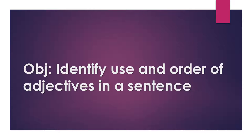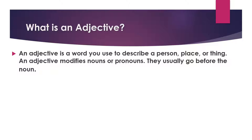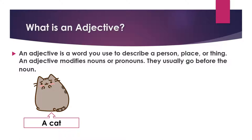First of all, what is an adjective? An adjective is a word you use to describe a person, place, or thing. An adjective modifies nouns or pronouns. They usually go before the noun. For example, we have a picture of a cat. A cat will be a noun, so we can modify that noun.